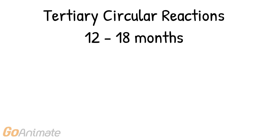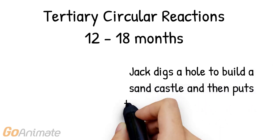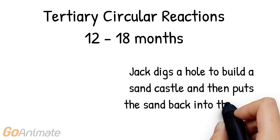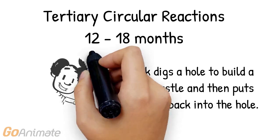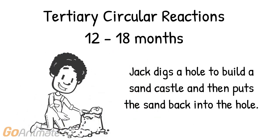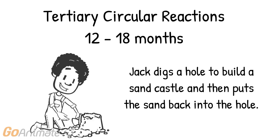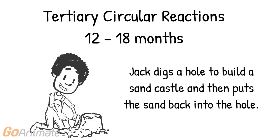Tertiary circular reactions are when a child can reverse what he accomplished prior. For example, if Jack digs a hole to make a sandcastle and then decides he wants to put all the sand from his castle back into the hole and pat it down, that would be an example of a tertiary circular reaction.